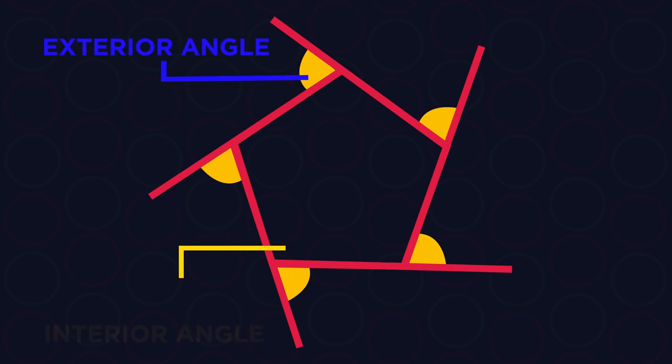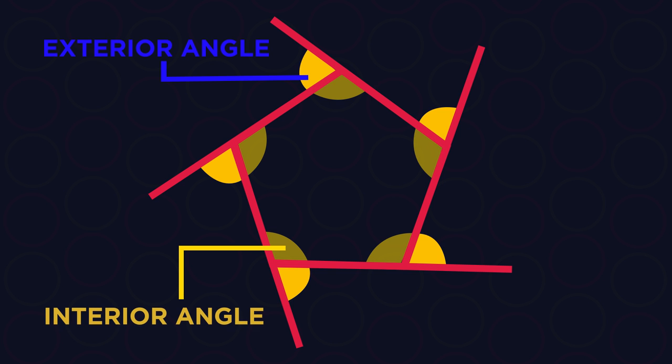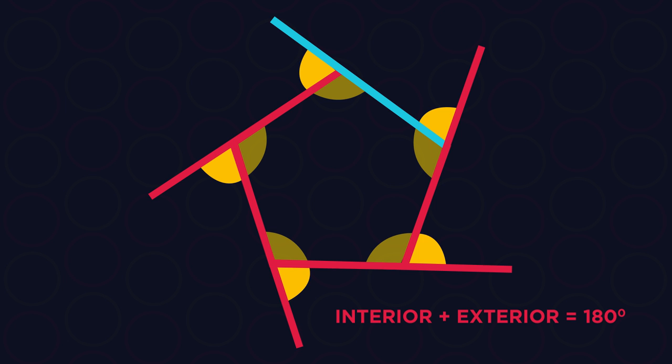So let's have a look at exterior angles. They're a little strange. Exterior angles make a straight line with the interior angle. They aren't the whole outside angle, but just the part that makes a straight line.